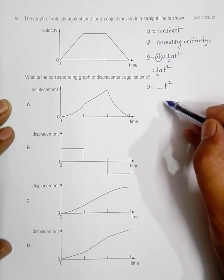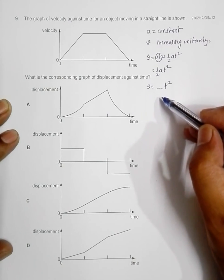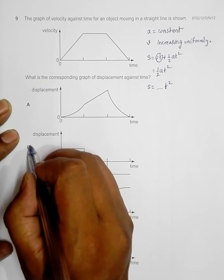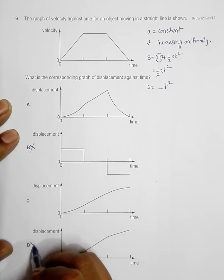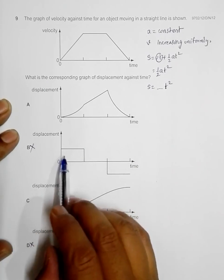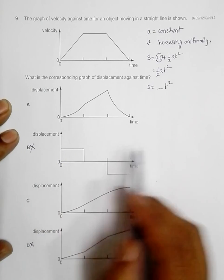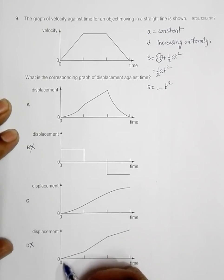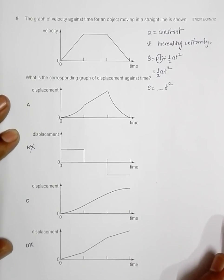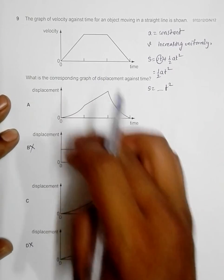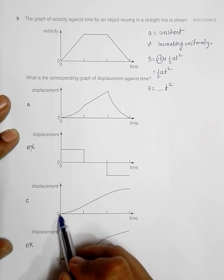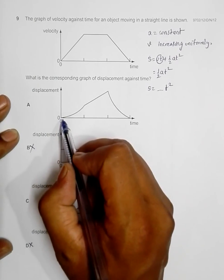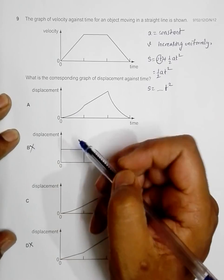A parabolic graph means choices B and D do not qualify — choice B has a straight line parallel to the time axis, and choice D has a straight line passing through the origin. So the only qualifying options are A and C, both of which show displacement increasing parabolically in the first section.